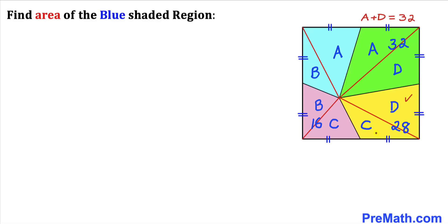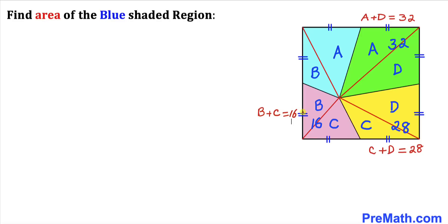So therefore for this yellow region I can write C plus D equals 28. Now let's move on to the pink region. Its area is 16, and its area is also the sum of these two individual areas B and C. Therefore I can write for this pink region B plus C equals 16. And finally for the blue region, the area is going to be simply A plus B.